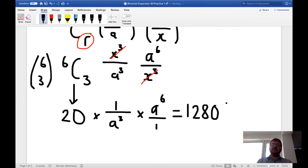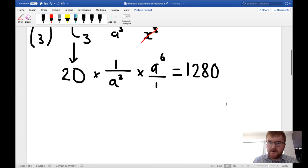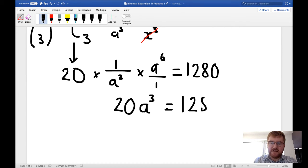Now let's make this a little bit tidier. So a⁶ divided by a³, well 6 minus 3, remember with indices we minus the little numbers, this becomes a³. We still have our 20 here, so we put that as our coefficient, and this is now equal to 1280, like so.